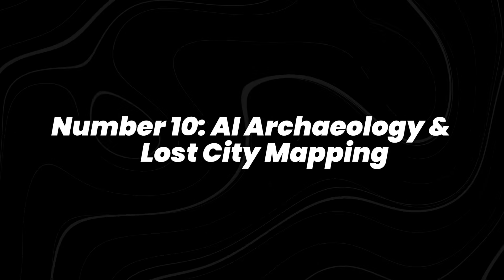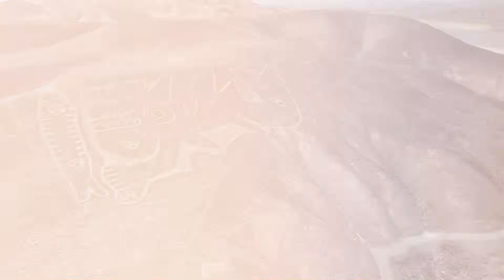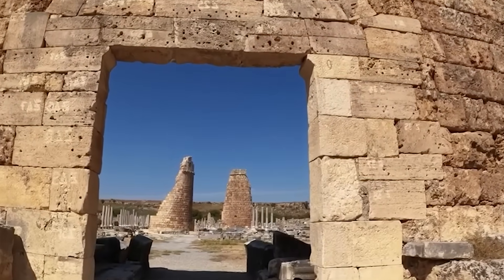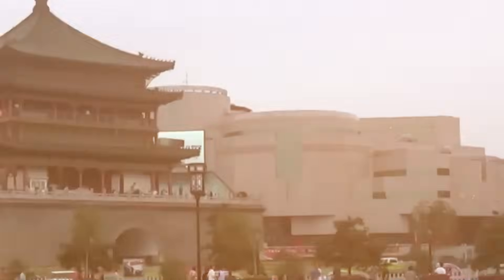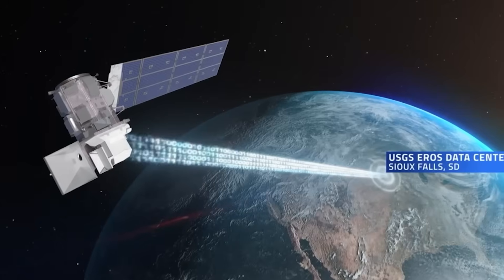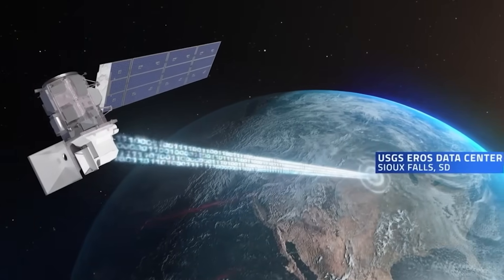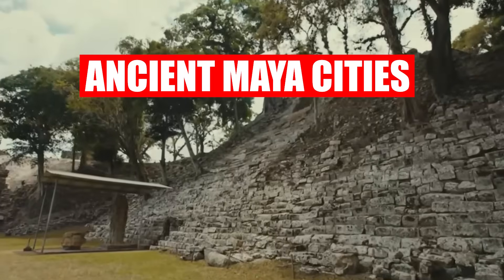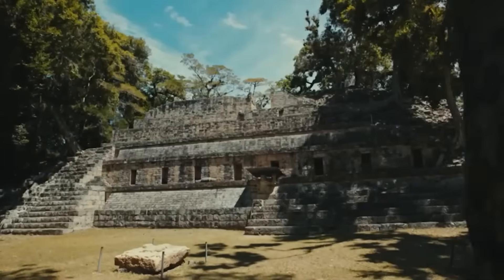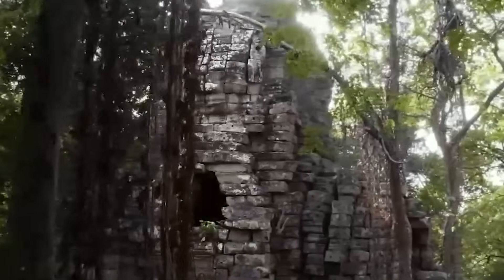Number 10, AI Archaeology and Lost City Mapping. While everyone's obsessed with AI art, archaeologists are using it to rewrite history. A 2024 Nature study detailed how researchers from NASA and the University of Sydney trained machine learning models on satellite and LiDAR data to uncover ancient Maya cities buried under thick jungle in Guatemala. The same approach is revealing forgotten settlements in Cambodia and the Amazon Basin, places invisible to human eyes for centuries.